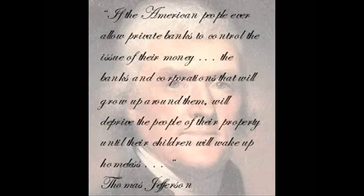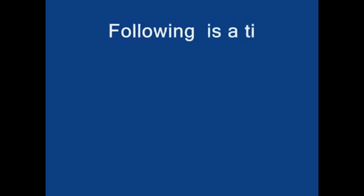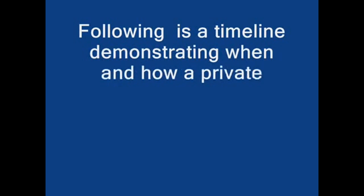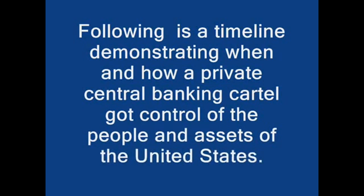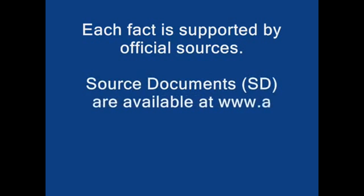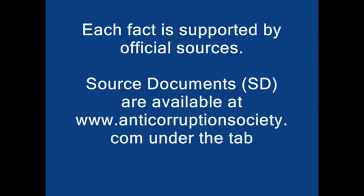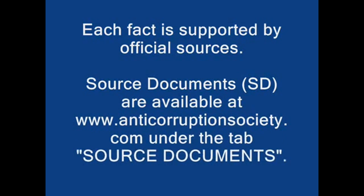Thomas Jefferson: 'If the American people ever allow private banks to control the issue of their money, the banks and corporations that will grow up around them will deprive the people of their property until their children will wake up homeless.' Following is a timeline demonstrating when and how a private central banking cartel got control of the people and the assets of the United States. Each fact is supported by official sources. Source documents are available at www.anticorruptionsociety.com under the tab Source Documents.